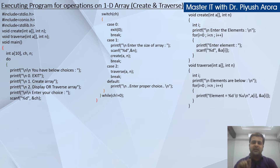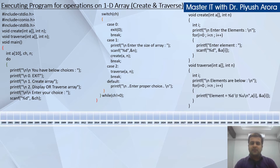This is the main memory. You all know that the main memory is linear — it will be one by one.